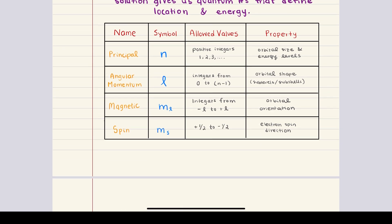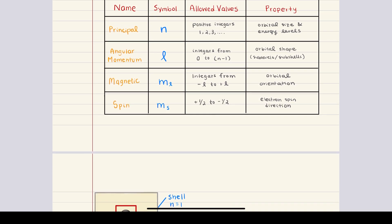Let's go through the quantum numbers one by one. The first quantum number is the principal quantum number, represented by the symbol lowercase n. It can take on any positive integer value: one, two, three, and so on. This number tells us the main energy level or shell where an electron is located. A larger value of n corresponds to a larger shell, meaning the electron is on average farther from the nucleus.